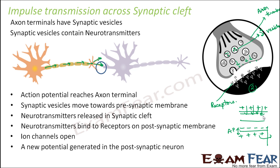The ion channels open and a new potential is generated in the post-synaptic neuron. The process of resting membrane potential, generation of action potential, and conduction of action potential may not be simple — please go back and review the videos if needed, and do not move ahead until the concepts are clear. Neurons are the functional unit of the nervous system: each neuron gets excited when a stimulus comes, an action potential is generated, and that action potential gets shifted from one region to another — that is how transmission takes place.